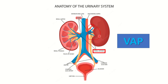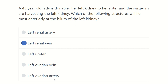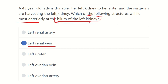At the level of the hilum, most anteriorly there is the renal vein, then the renal artery, and finally most posteriorly the renal pelvis or ureter. The second picture also makes it very clear. So our answer is the left renal vein — it lies most anteriorly at the level of the hilum, applicable to both the left and right kidney.